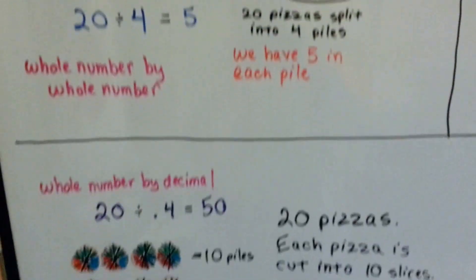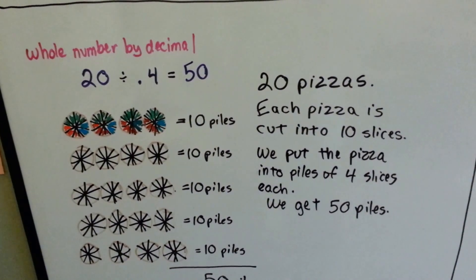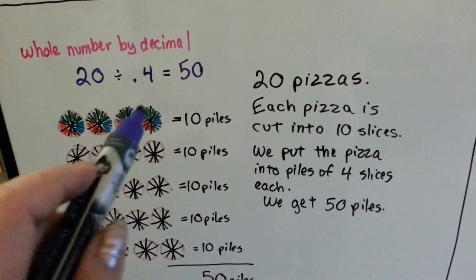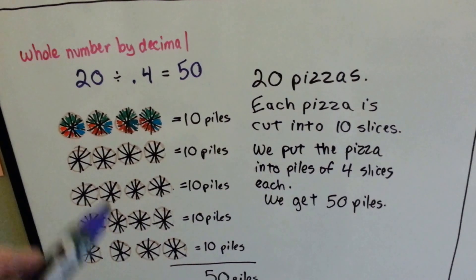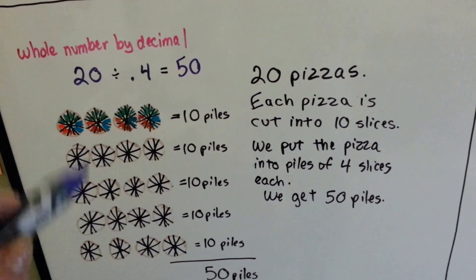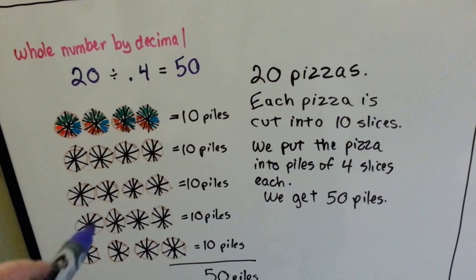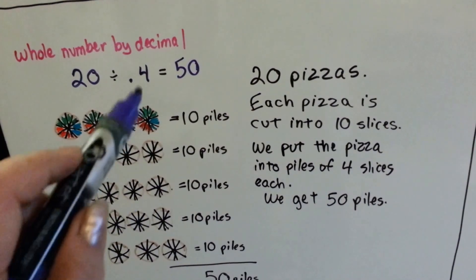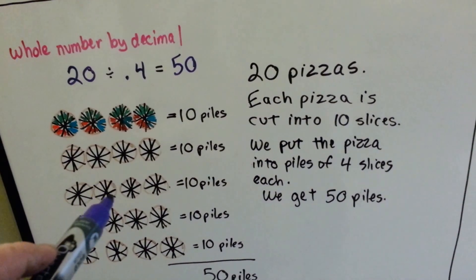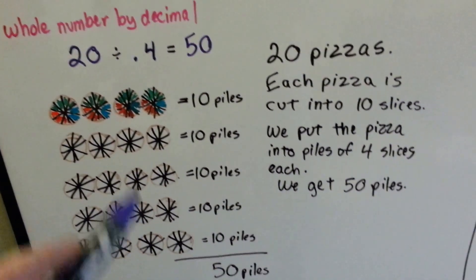What happens when we have 20 pizzas and we divide them by 4 tenths? We get some really colorful pizzas. We have 20 pizzas. Each pizza is cut into 10 slices — that's the tenths. We put the pizza into piles of 4 slices each and we get 50 piles.